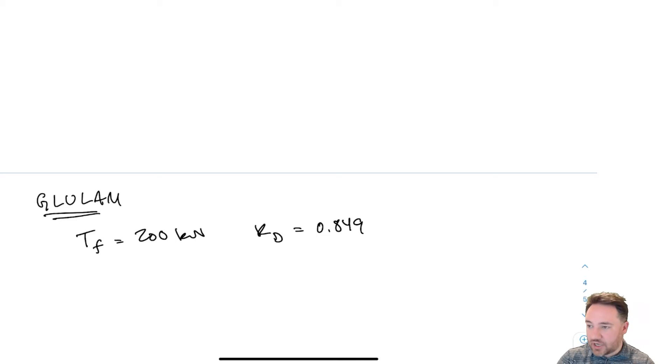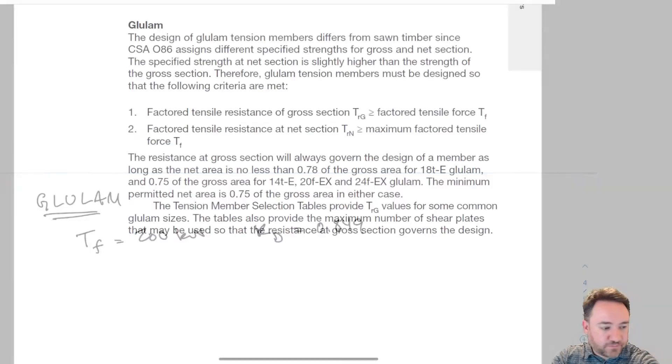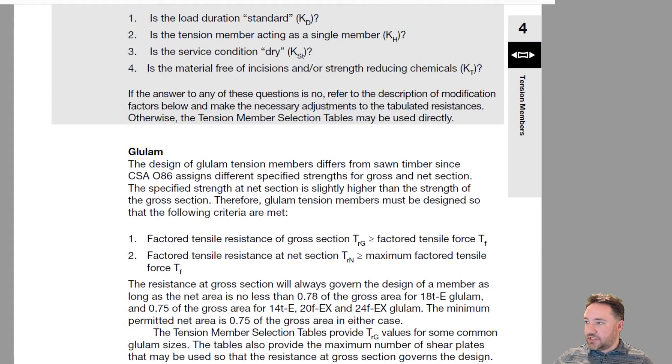Now we're going to go through the same process, but I'm going to include a new concept which was not included before. For glulam, in most cases, we always have to do this check of net section strength and also gross section strength. For glulam we have two TR equations, and whichever one has a lower strength is the one that we're going to use.